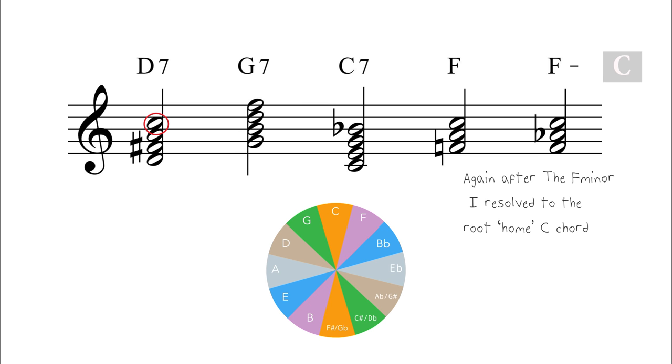C is the flattened seventh of D7, which resolves down to B, the third of G, which resolves down to B-flat, the flattened seventh of C7, which resolves down to A, the third of F major, which in turn moves down to A-flat, the third of F minor.